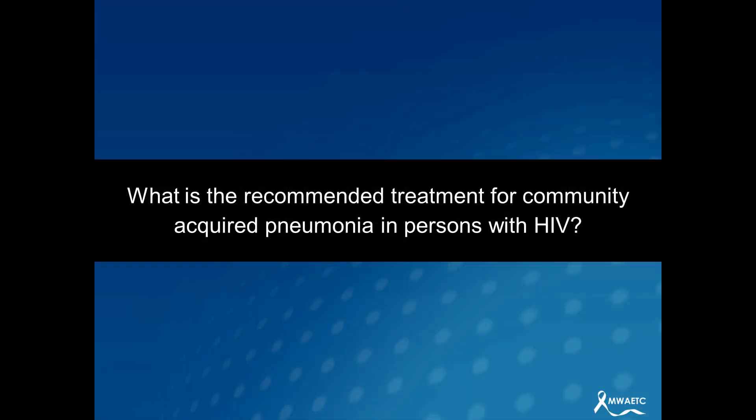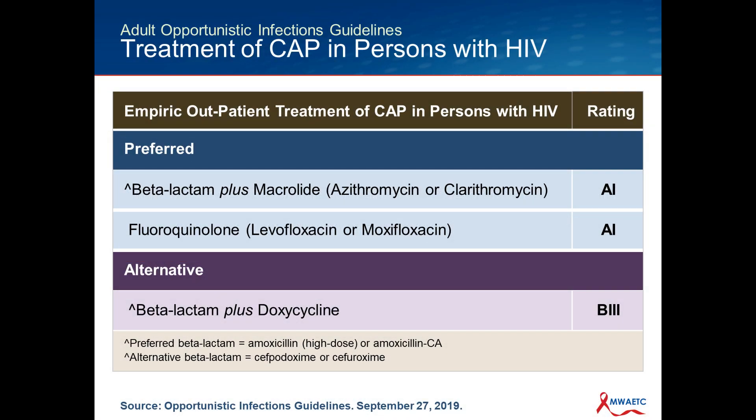What about community-acquired pneumonia? The question is what is recommended for treatment of community-acquired pneumonia in persons with HIV. These guidelines just got updated in September and are in line with new American Thoracic Society IDSA guidelines. The preferred options for people with HIV and community-acquired pneumonia treated as outpatients are now combination therapy with a beta-lactam plus a macrolide — azithromycin or clarithromycin — with the beta-lactam being amoxicillin or amoxicillin-clavulanate. That's an A1 rating, or alternatively a fluoroquinolone with levofloxacin or moxifloxacin. Monotherapy with azithromycin is no longer recommended for people with HIV.